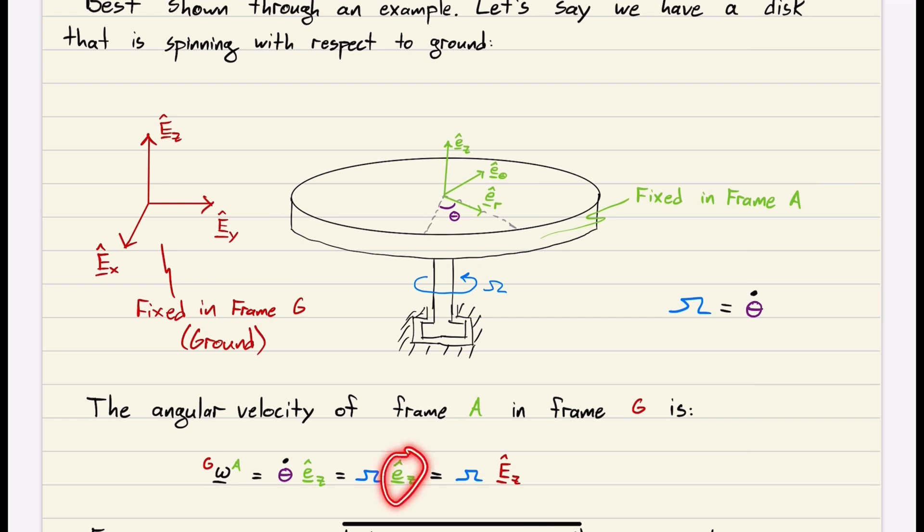Our green EZ is equal to our red EZ because they always point in the same direction. They both point straight up, based on how I set up the problem.